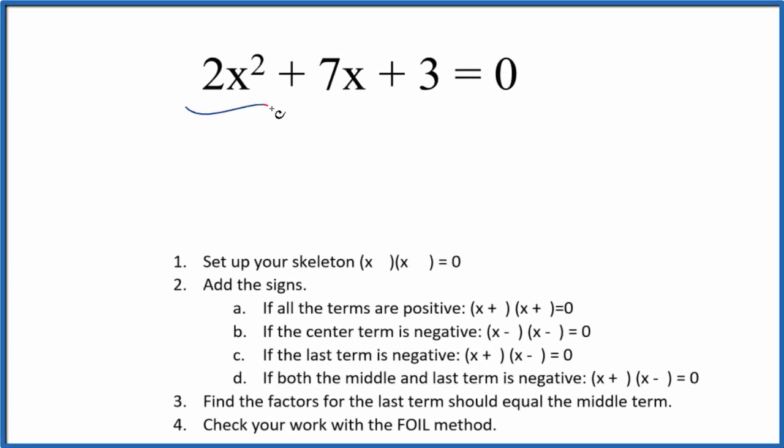If you're asked to factor 2x squared plus 7x plus 3 equals 0, this is how I would do it. First, I'd set up a skeleton equation. So that would look like this here.